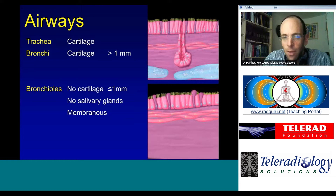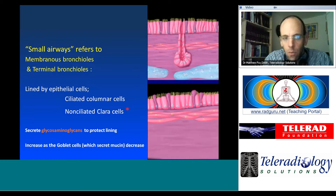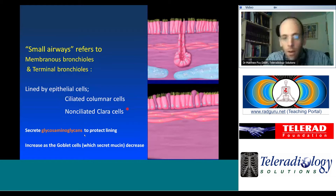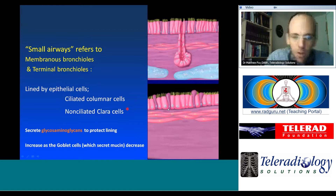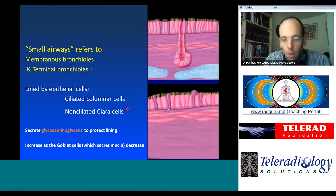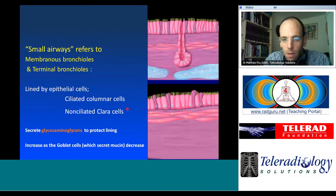Bronchioles have no cartilage — they are purely membranous and lack salivary glands. The small airways, the membranous and terminal bronchioles, are lined with ciliated epithelial cells, columnar cells, and non-ciliated Clara cells. These Clara cells secrete glycosaminoglycans that protect the lining of the small airways, functioning similarly to surfactant in the alveoli. The number of Clara cells increases as we go down the airways, as goblet cells — which secrete mucin in the larger airways — decrease.